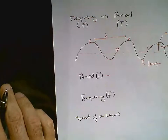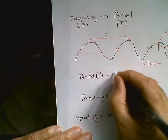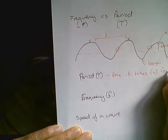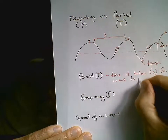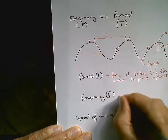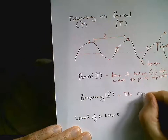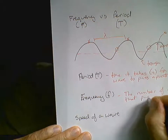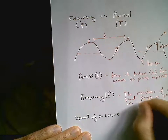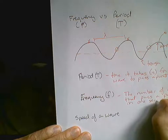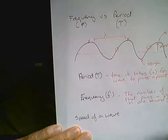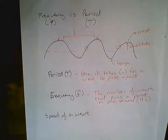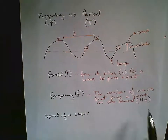The period of a wave is the time it takes for a wave to pass a point, and that's measured in seconds. Frequency is the number of waves that pass a point in one second, and we call these hertz. So a period is the time it takes in seconds for a wave to pass a point, and frequency is the number of waves per second measured in hertz.